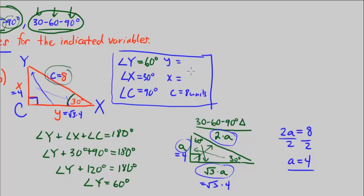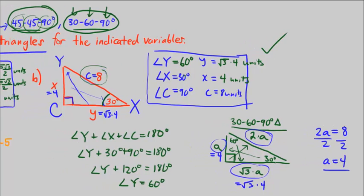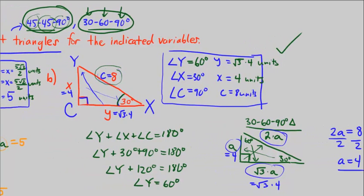Plugging into our answer chart: side y = 4√3 units, side x = 4 units, side c = 8 units. This solves the triangle, and we're done with Part B. This also ends CPM Pre-Calculus Chapter 2, Number 45.